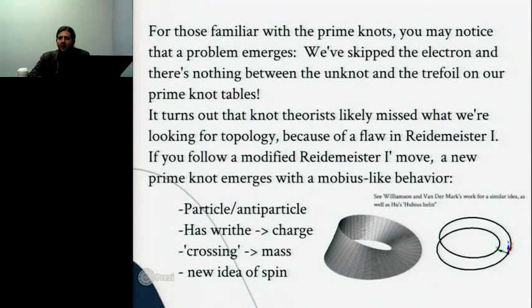So to maybe the part that you're most interested in, Stu, the electron. We've skipped something. So there's nothing in between an unknot and a trefoil knot in the prime table of knots that was developed by Tait and all. But they developed that with the first Riedemeister move without a modification to account for writhe. And subsequently, others have modified that first Riedemeister move. And when you do that, you find that there's something else that's sort of prime-ish. And that prime-ish thing is sort of a Mobius knot of sorts.